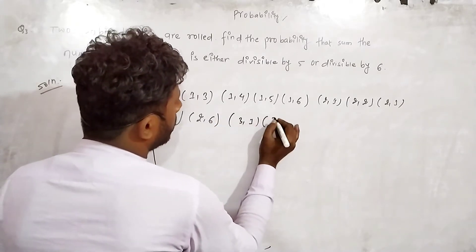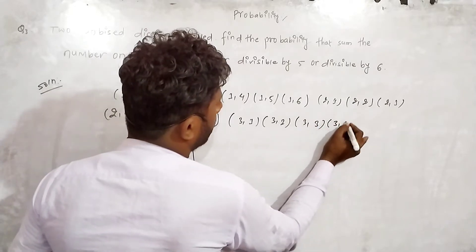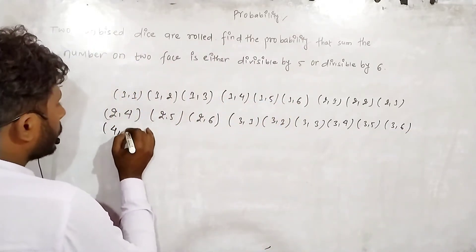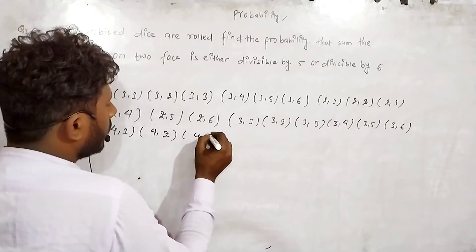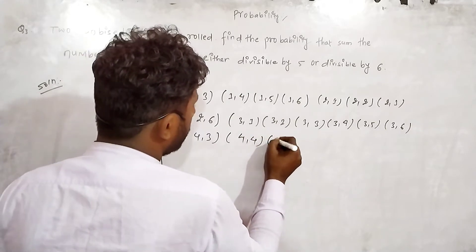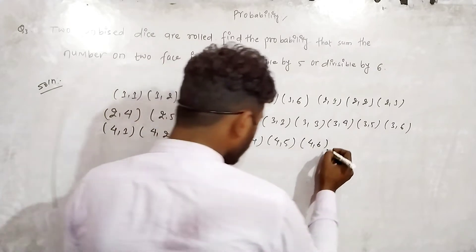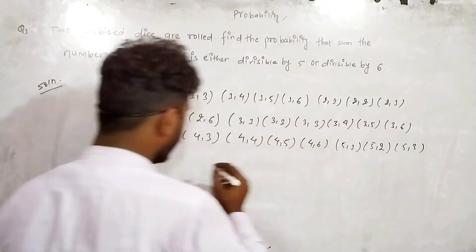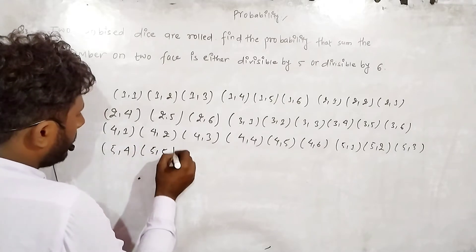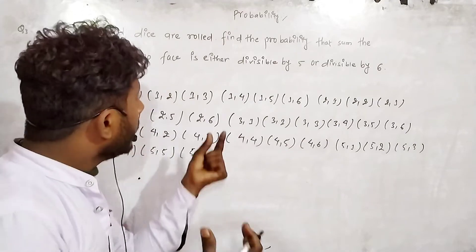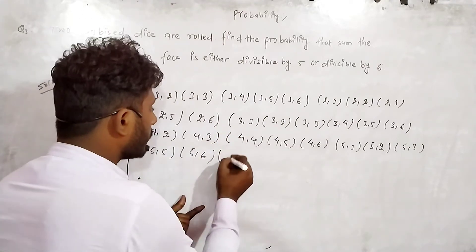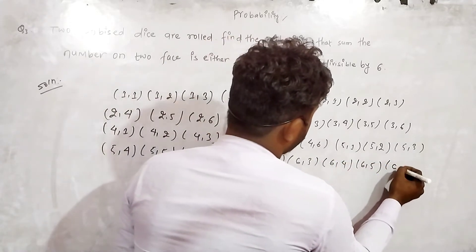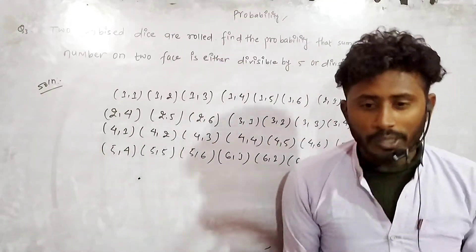Die one showing 3: (3,1), (3,2), (3,3), (3,4), (3,5), (3,6). Die one showing 4: (4,1), (4,2), (4,3), (4,4), (4,5), (4,6). Die one showing 5: (5,1), (5,2), (5,3), (5,4), (5,5), (5,6). Die one showing 6: (6,1), (6,2), (6,3), (6,4), (6,5), (6,6).